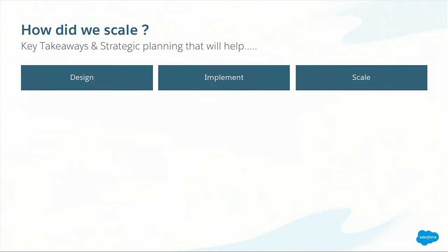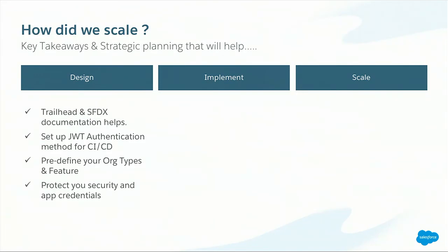What are the key takeaways? How did we scale, and what strategic planning can help any organization or ISV partner dealing with packages? With respect to design, the Trailhead and SFDX documentation definitely helped, and the SFDX CLI help command provides more insights. Set up JWT authentication for headless authentication between your DevHub and Jenkins server. Predefine your org types and the features commonly used by your organization. Also, protect your security and app credentials created from DevHub from being exposed — it's a security concern.